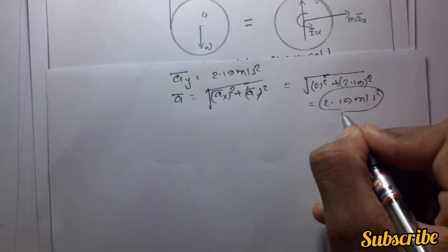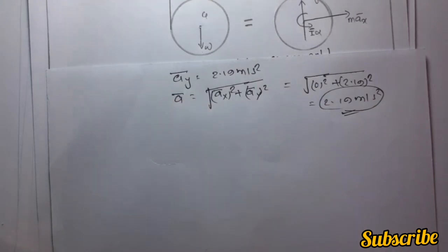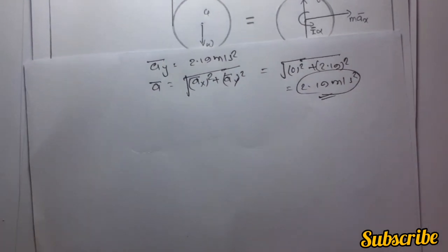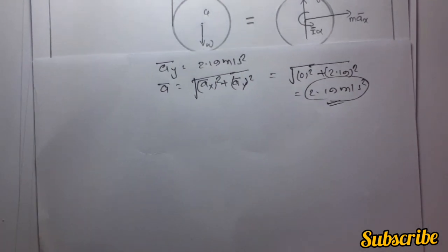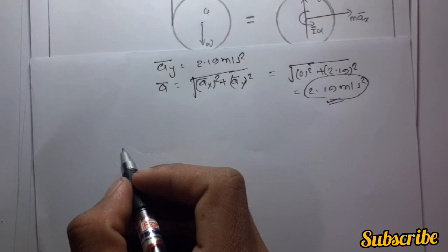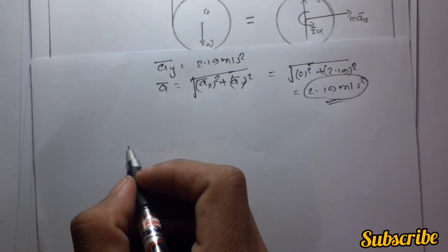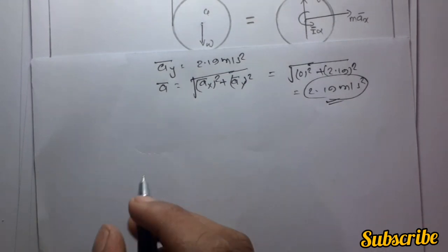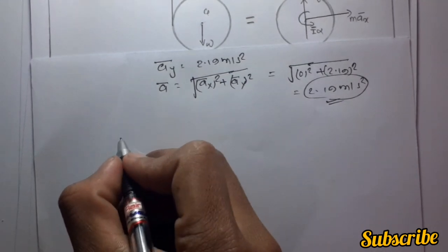The magnitude of ā is equal to the square root of āx squared plus āy squared, which equals the square root of 0 squared plus 2.19 squared, giving 2.19 meters per second squared.